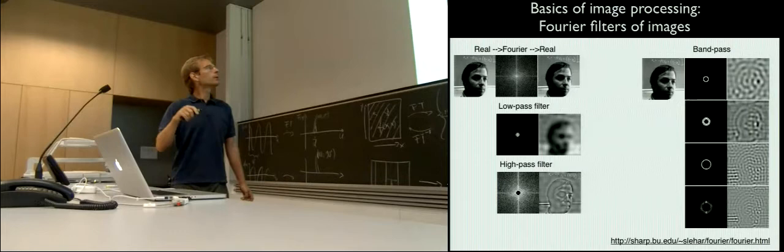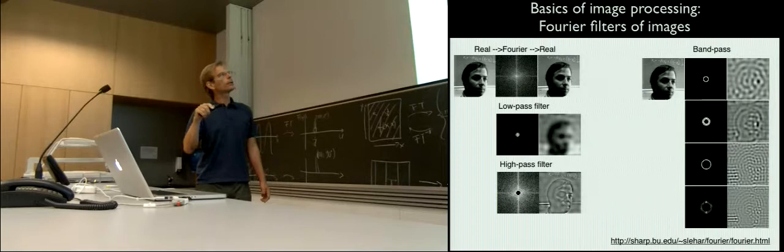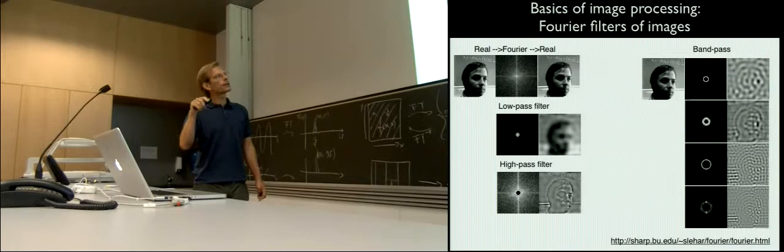If you add the inner and outer Fourier data back together, you get the exact Fourier transformation back, and adding the two filtered images gives you the exact original picture. The Fourier transformation is linear: you can add two pictures together and also add their two Fourier transformations together. These filters are called band-pass filters — allowing only a certain frequency range to pass.